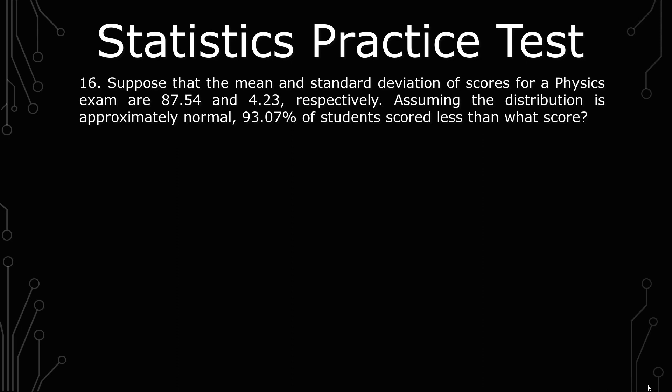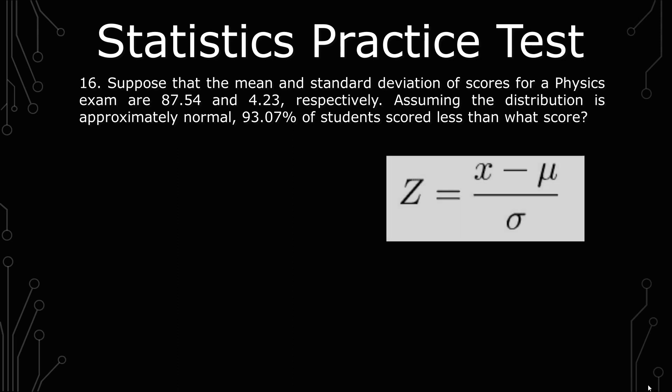We know from how this is set up that we're going to be dealing with the z-score, and the reason why we know that is because you're given a mean and standard deviation. We're told that the distribution is approximately normal and that we're given a percentage.